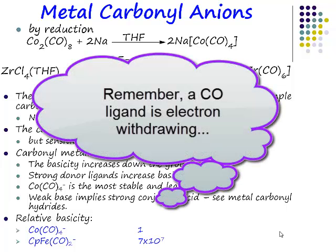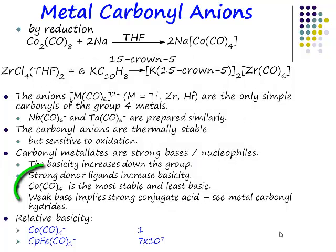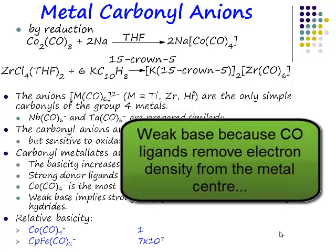A carbonyl ligand is an electron-withdrawing ligand. So if you have an anion like cobalt tetracarbonyl anion, it is described as the most stable and the least basic. There is formally a pair of electrons on the cobalt centre, but each one of those carbonyl ligands is withdrawing that electron density from the cobalt centre, meaning that cobalt tetracarbonyl is a really very weak base. Formally it's a base, but the carbonyl ligands are removing the electron density from the metal centre.